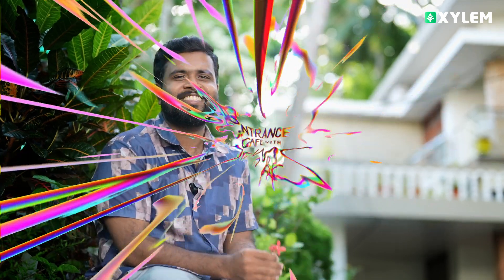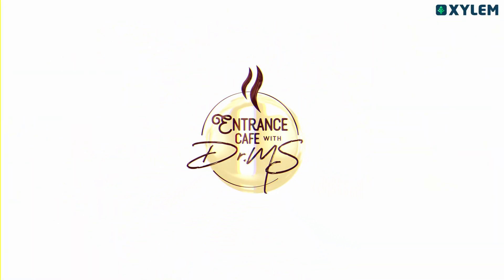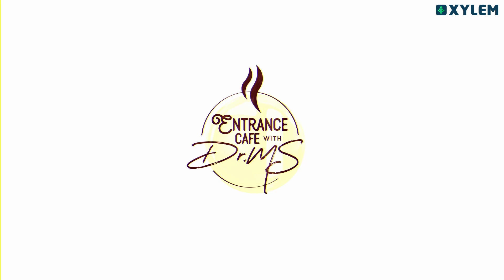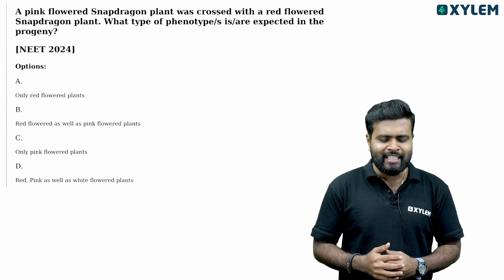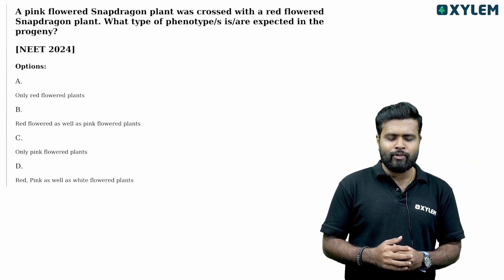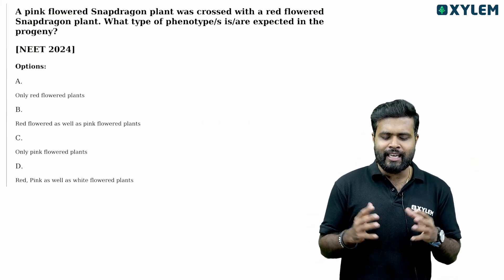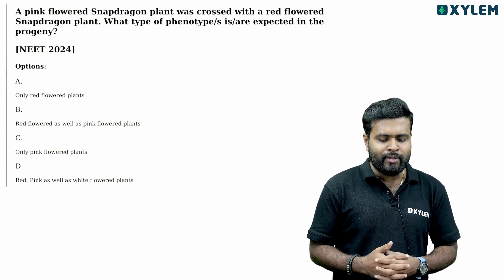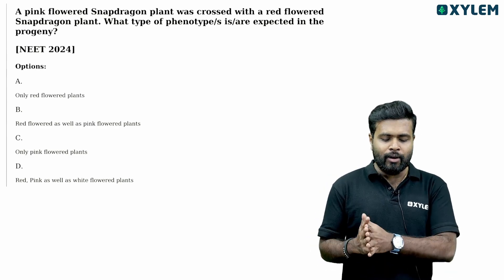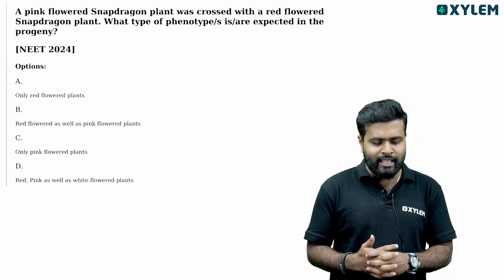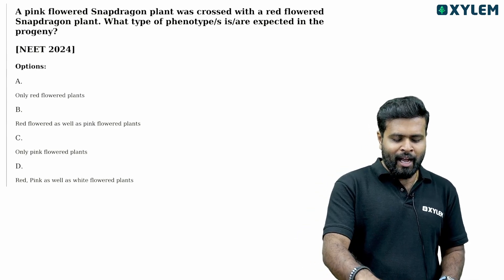Welcome to Entrance Cafe. Here is the first question: A pink flowered snapdragon plant was crossed with a red flowered snapdragon plant. What type of phenotypes are expected in the progeny?